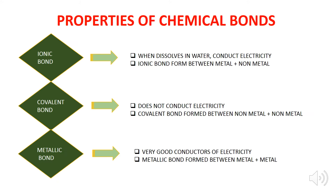Let's come to the properties of chemical bonds. Ionic bonds, when dissolved in water, conduct electricity; ionic bonds are formed between metals and non-metals. Covalent bonds do not conduct electricity; covalent bonds are formed between non-metals. Metallic bonds are very good conductors of electricity; metallic bonds are formed between metals.